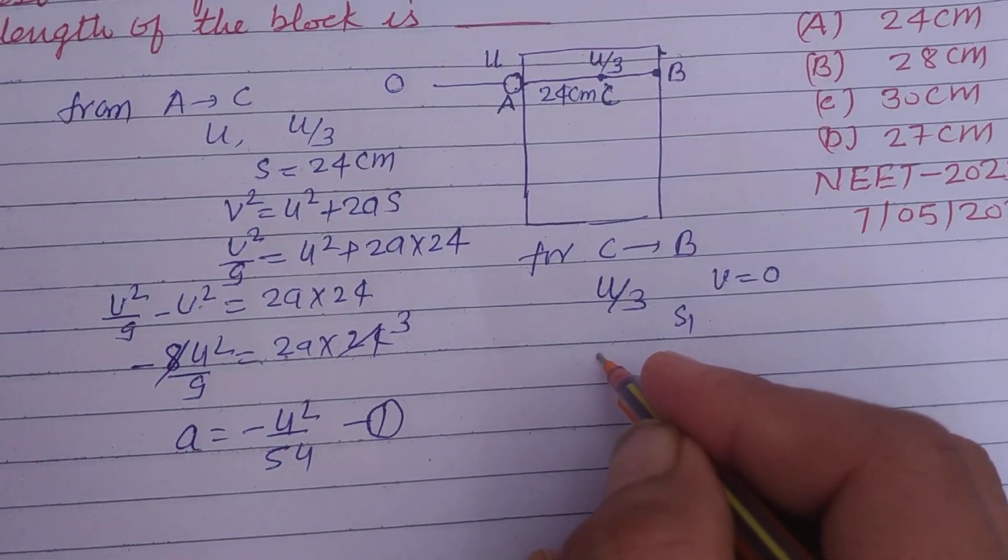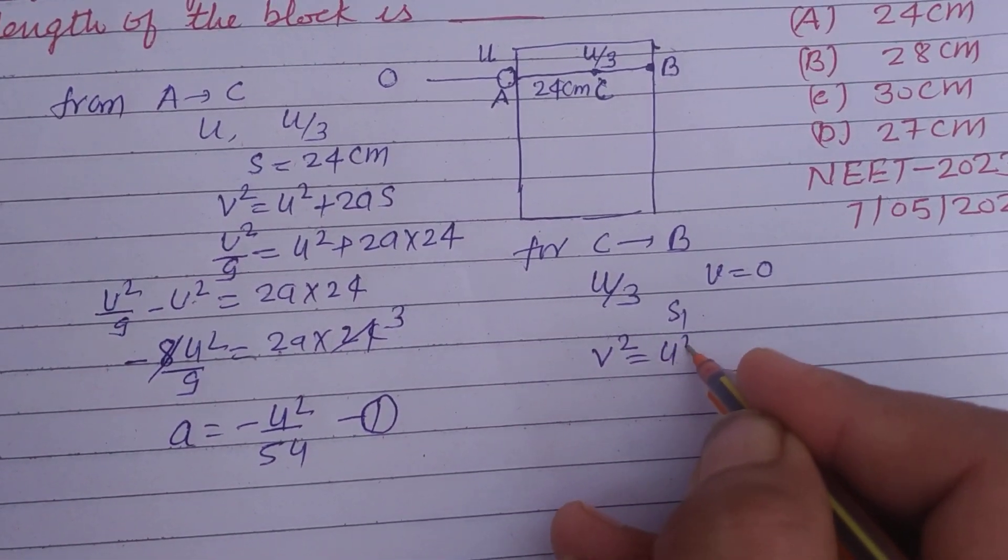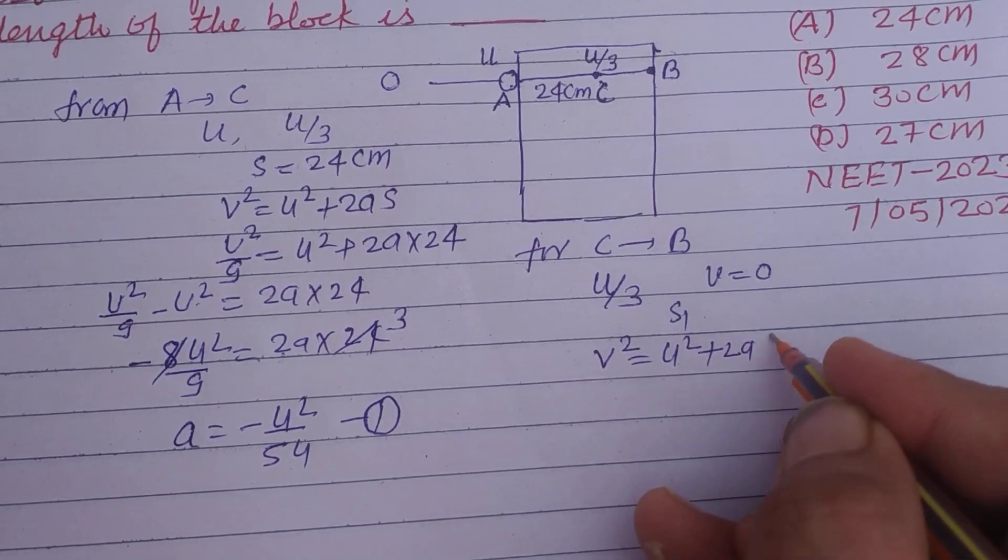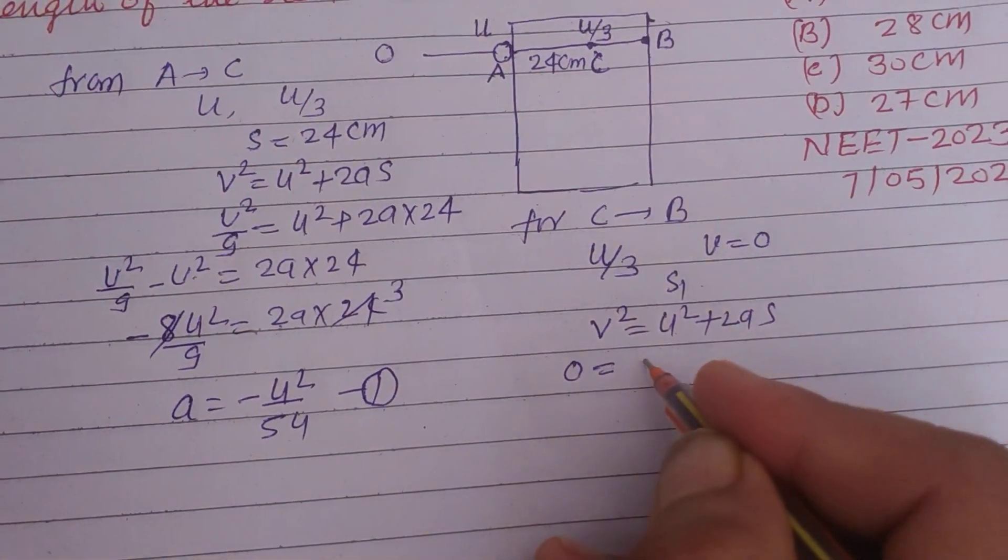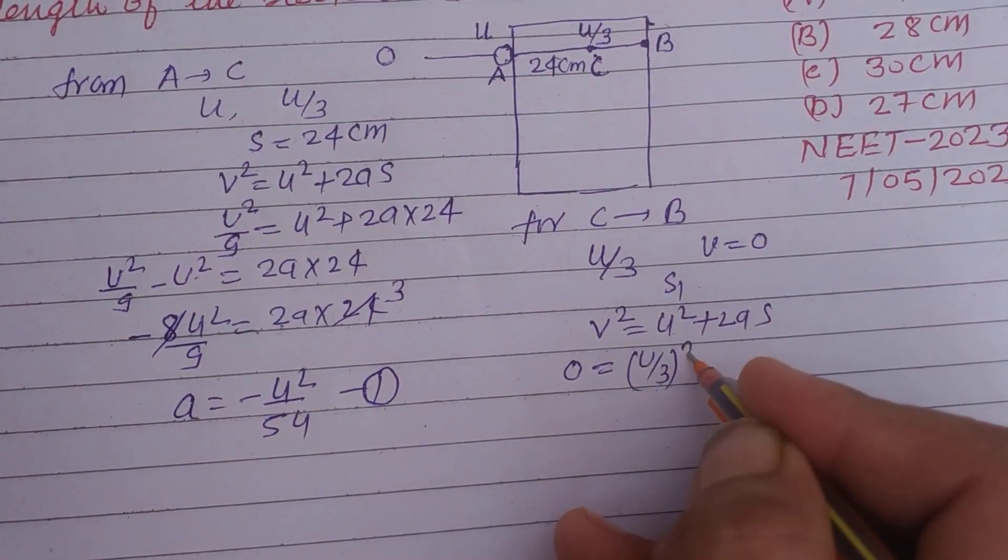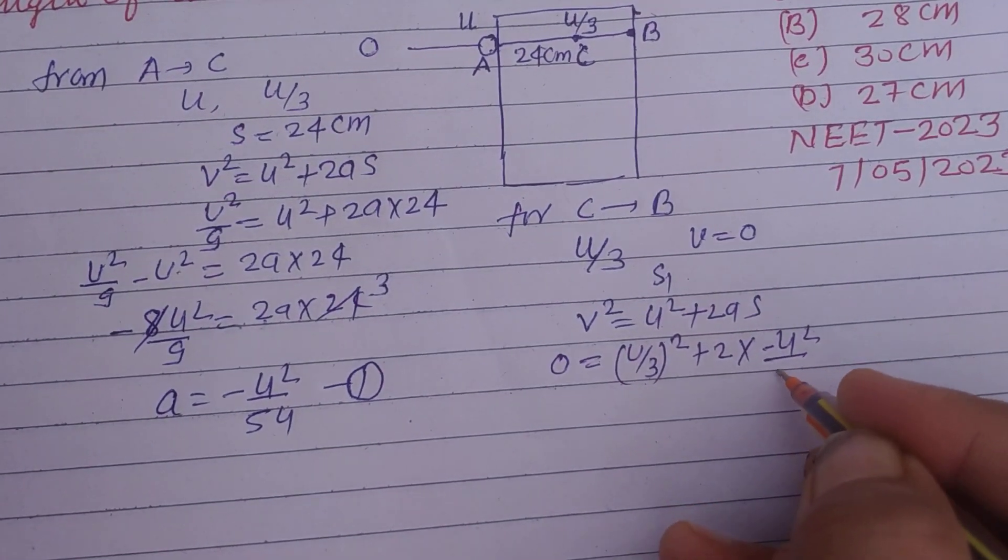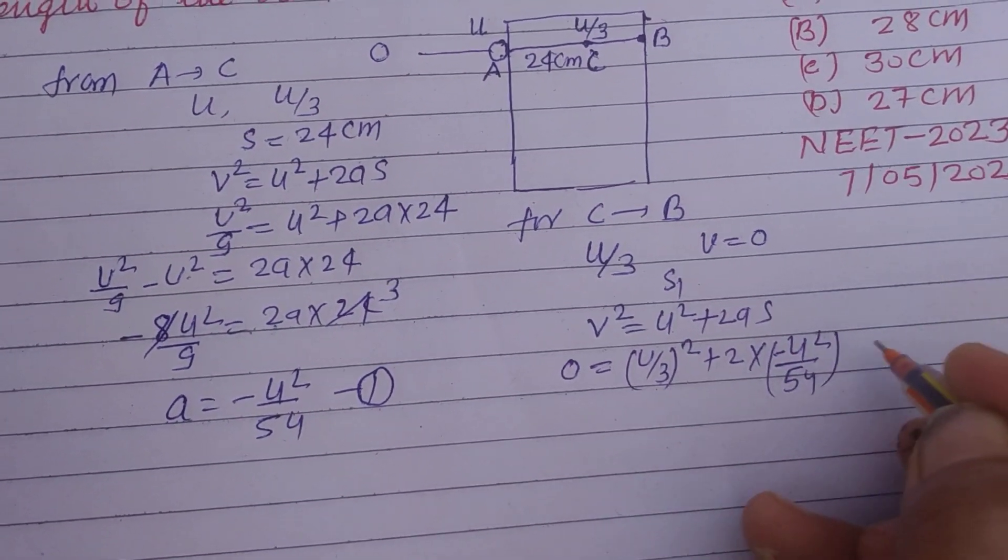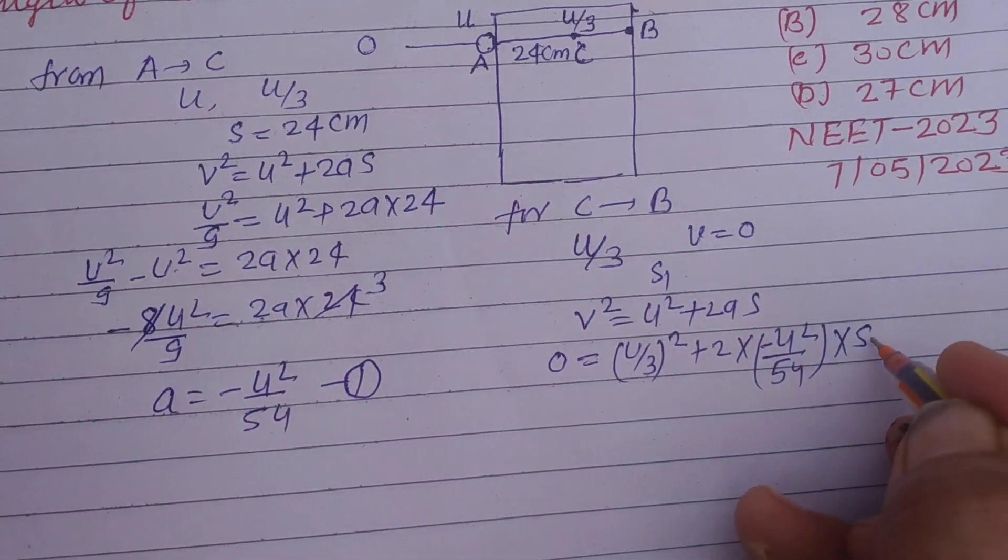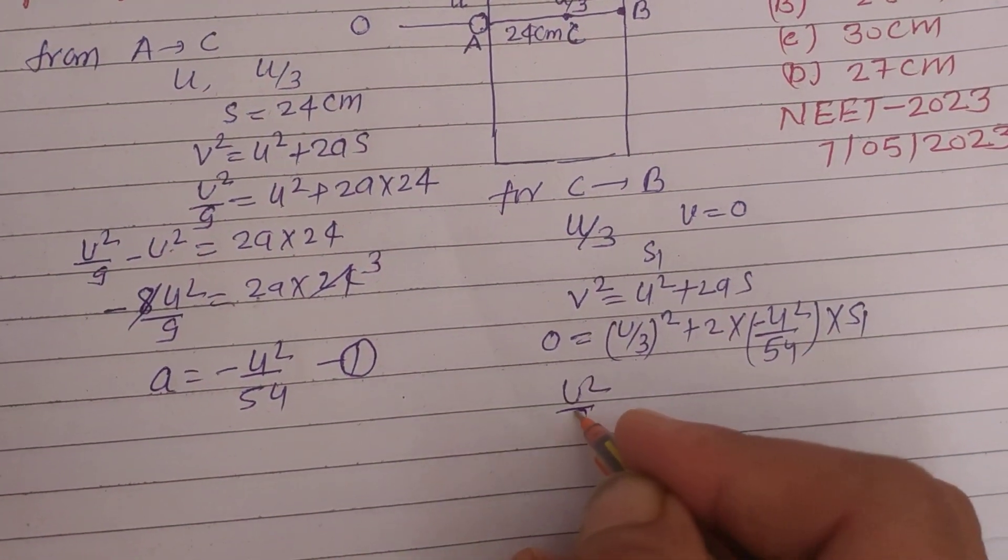So using v² = u² + 2as, here v is 0 and u is U by 3 squared, plus 2a is minus U² upon 54 into S1.